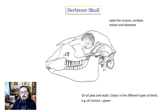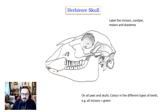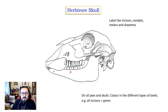Do something similar with the herbivore skull — this is probably a sheep or a goat. Look at the differences: we've got different types of teeth here. Do we have canines? There's a big gap called the diastema — find out what that's used for and make some notes. We've also got molars — what are the differences between these molars in our herbivore and those in our carnivore?